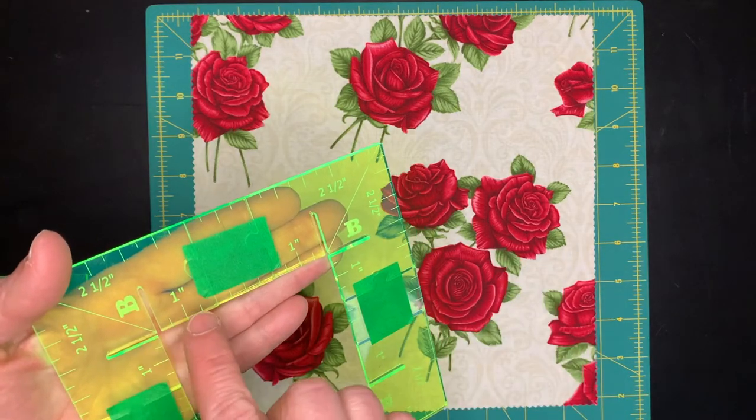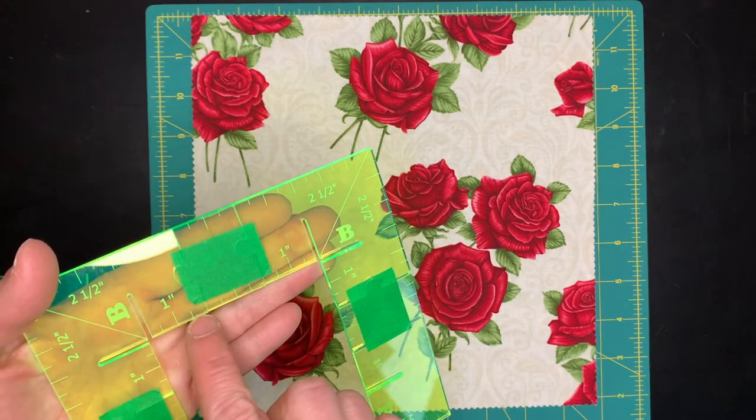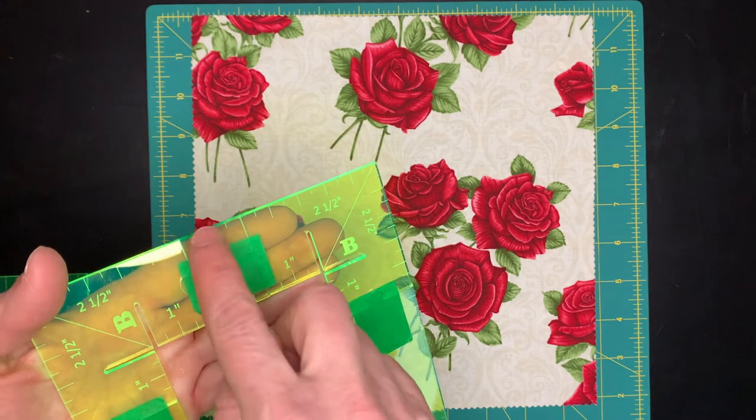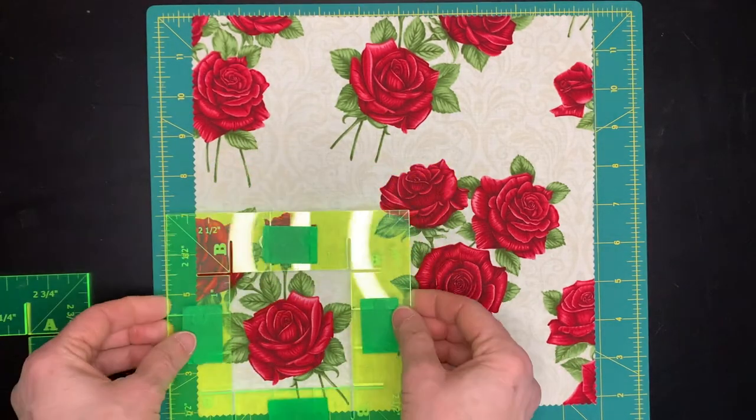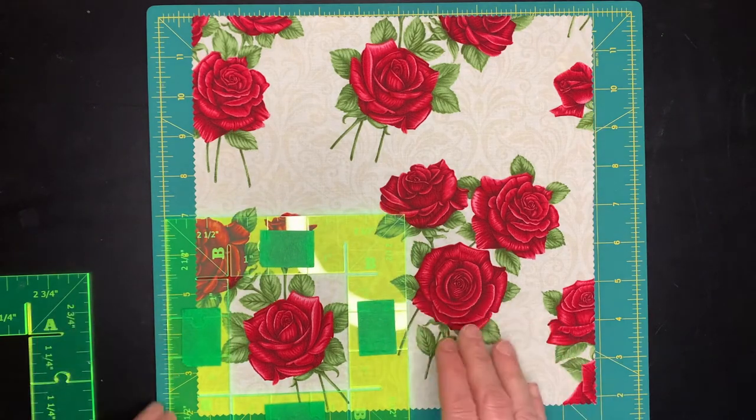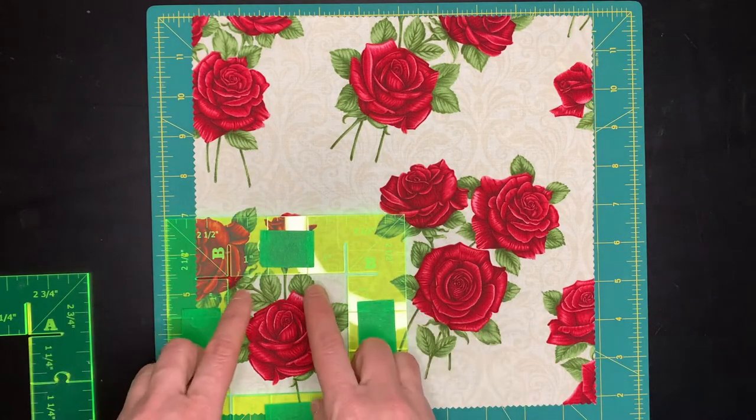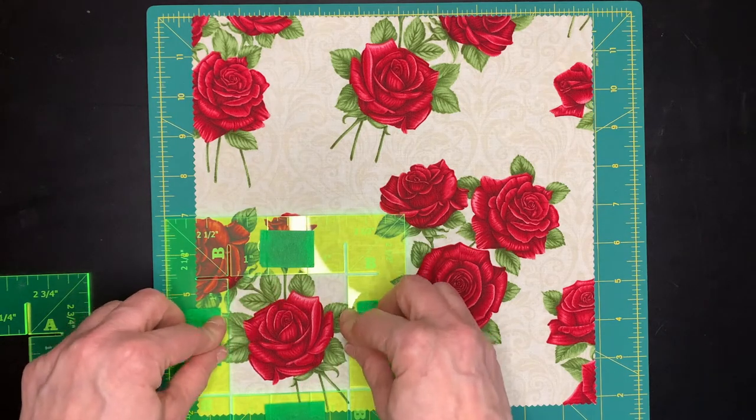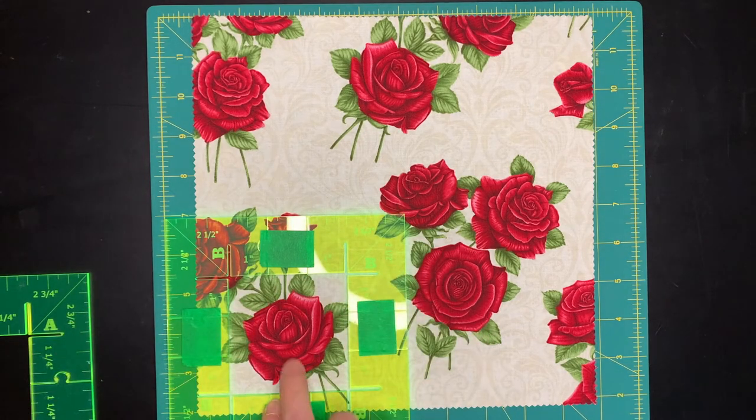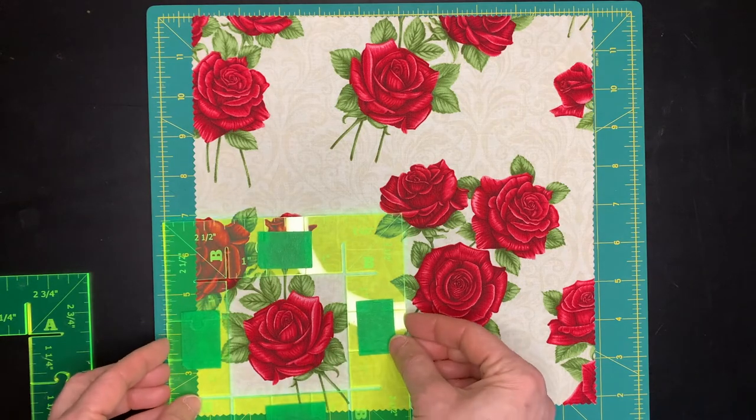The B blocks have one inch pieces on them. So that gives you two inches and then you add a one inch piece in the center to get your three inches. And I've already pre-assembled it so I can just set it down and see you use the lines of your ruler to make sure that you're happy with how the flower is positioned.